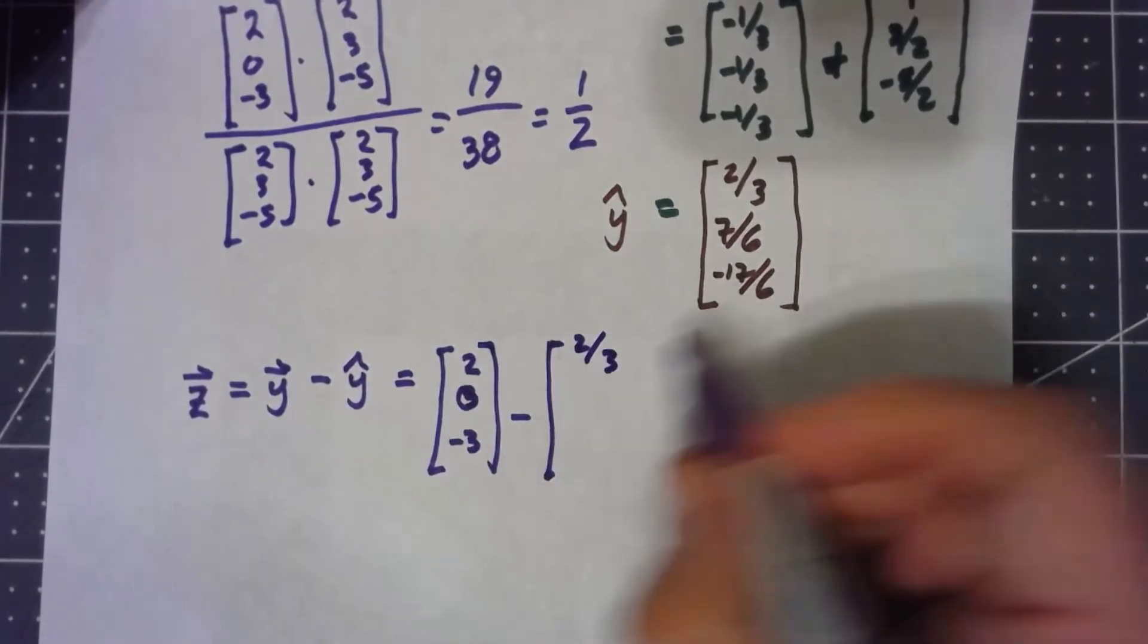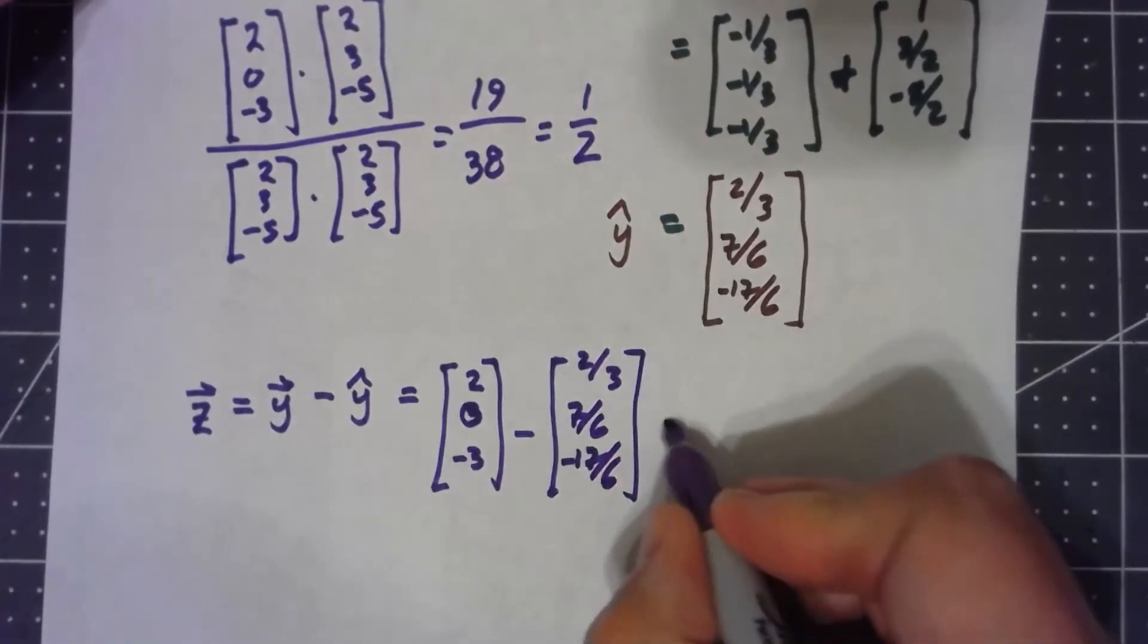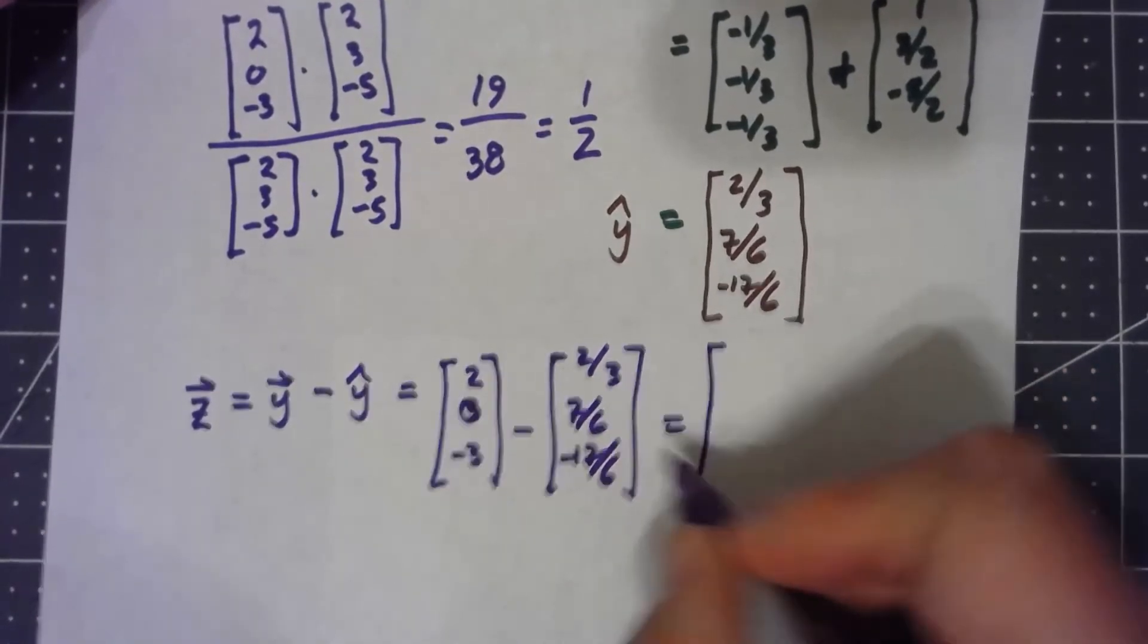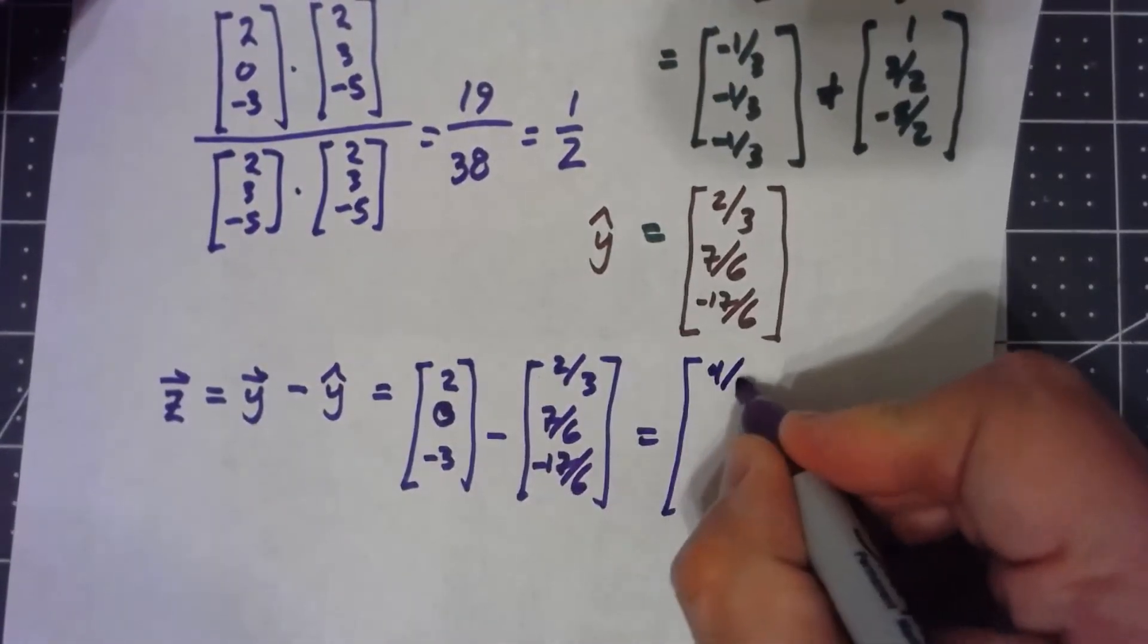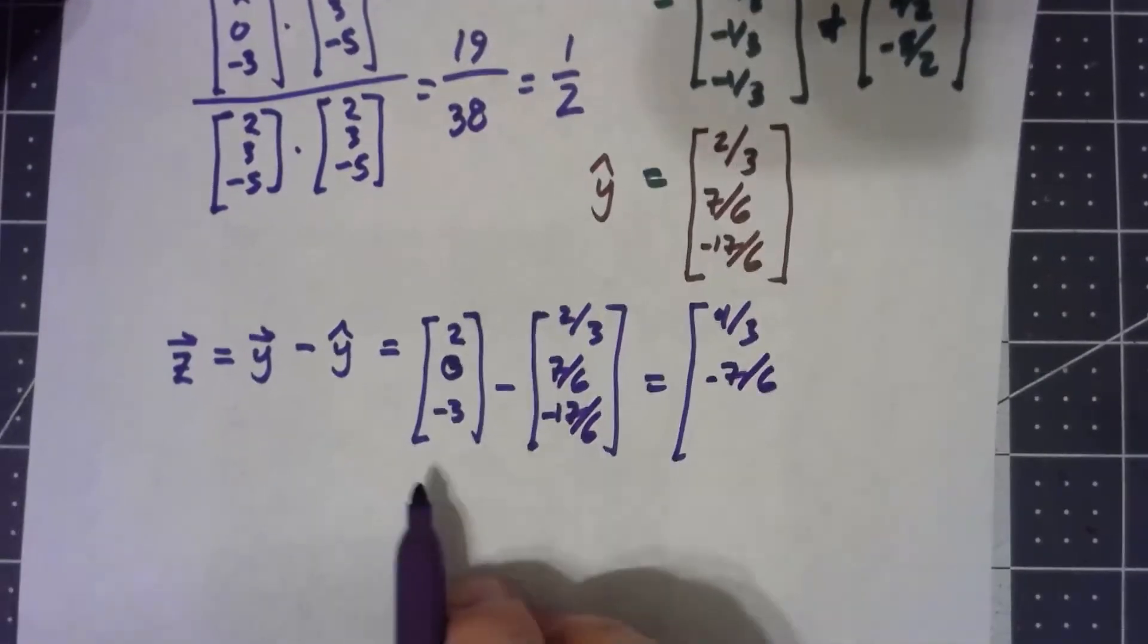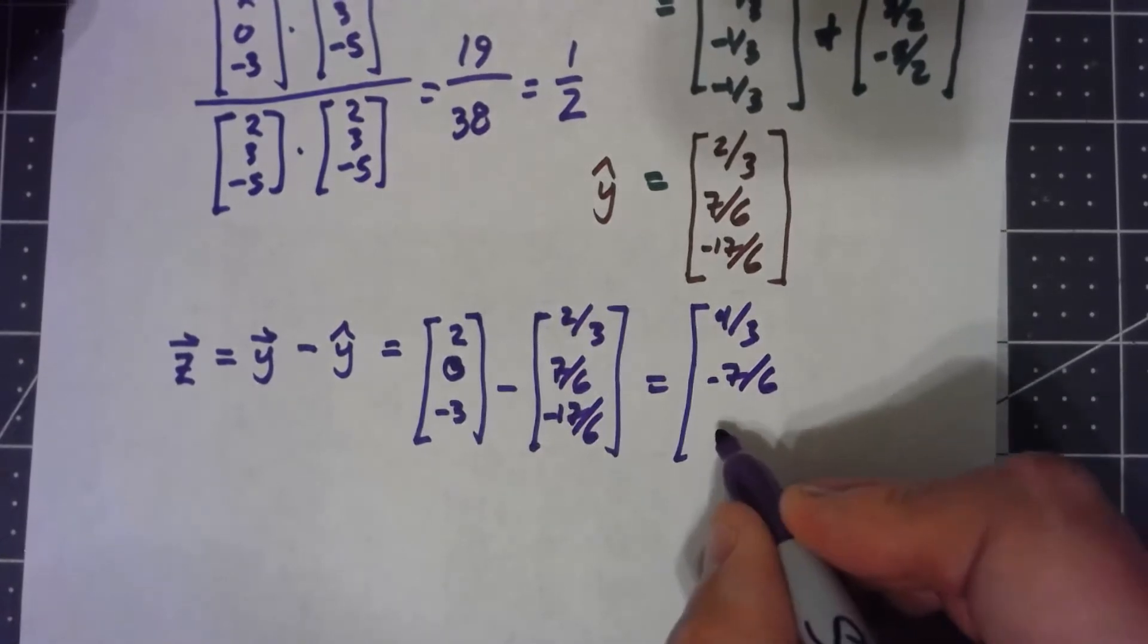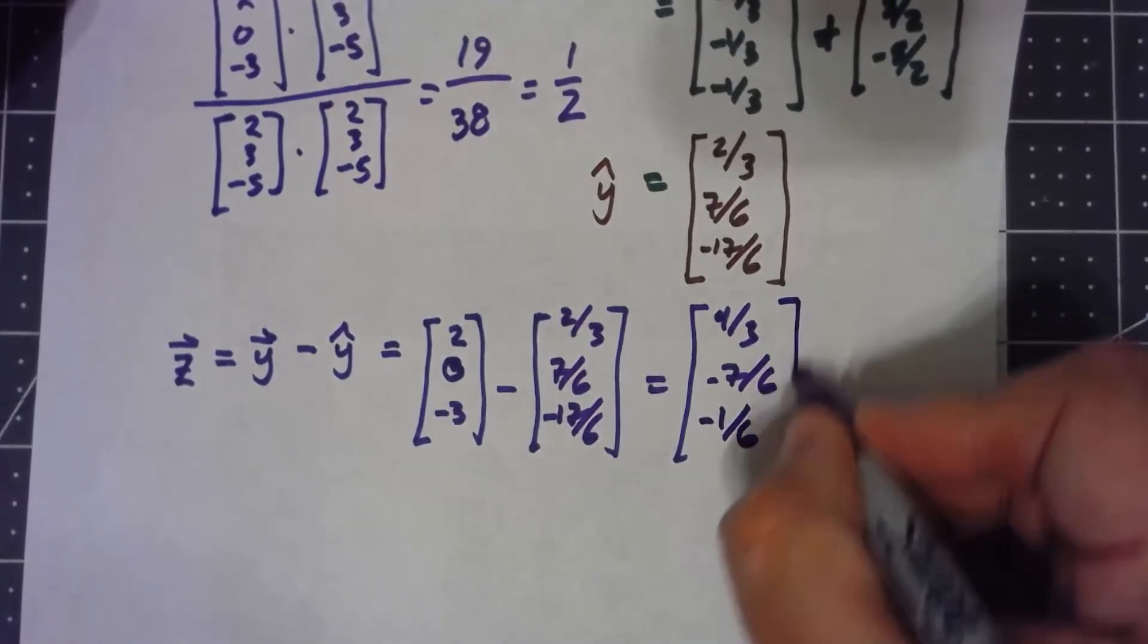is (2/3, 7/6, -17/6). 6/3 minus 2/3 gives us 4/3, 0 minus 7/6, -18/6 minus a -17/6 is a -1/6.